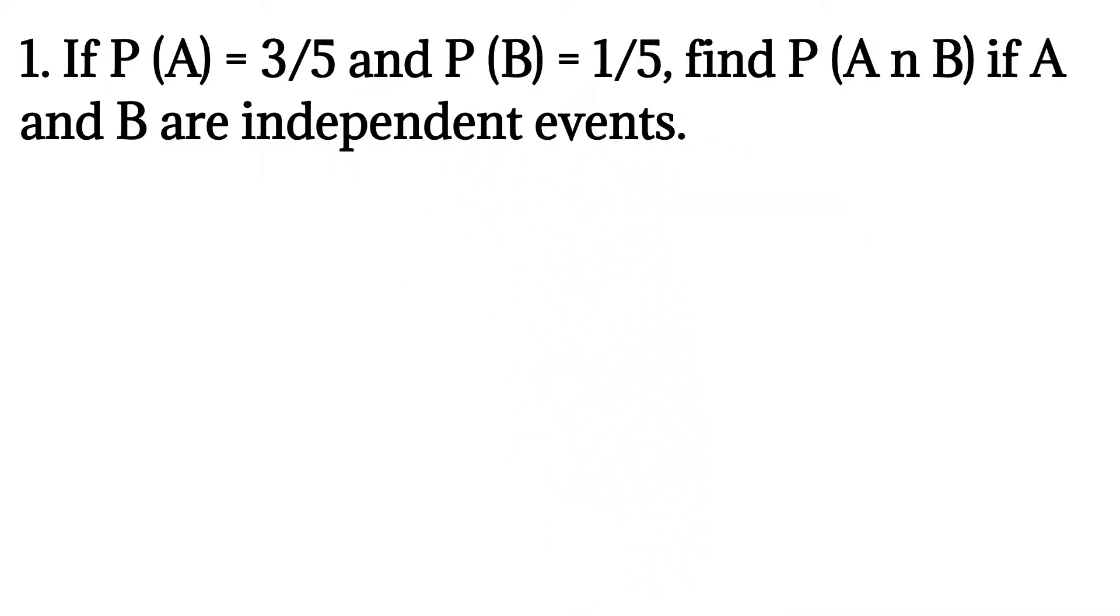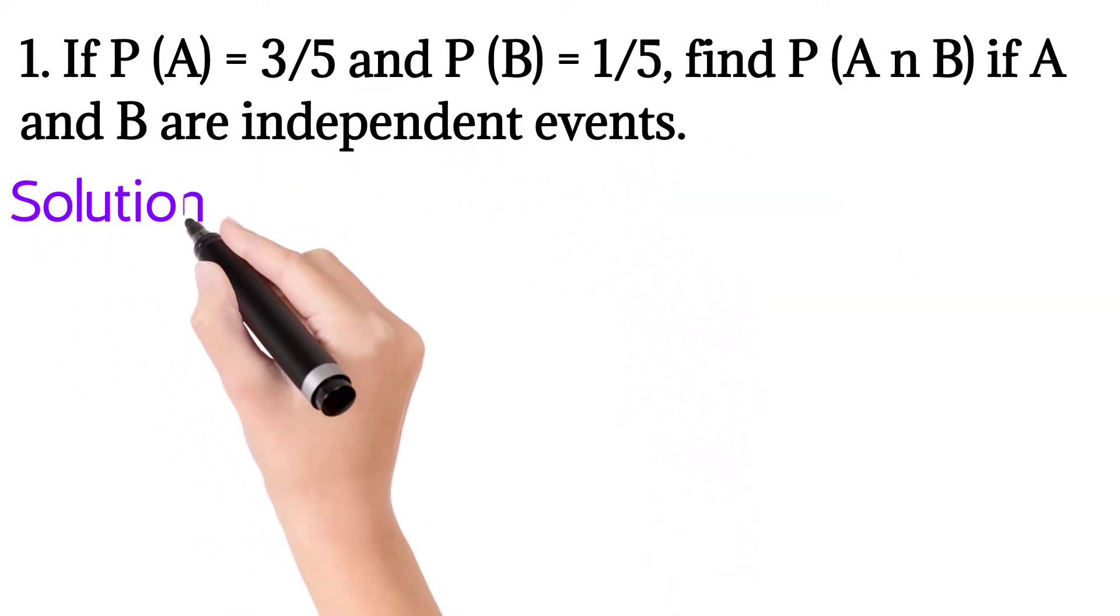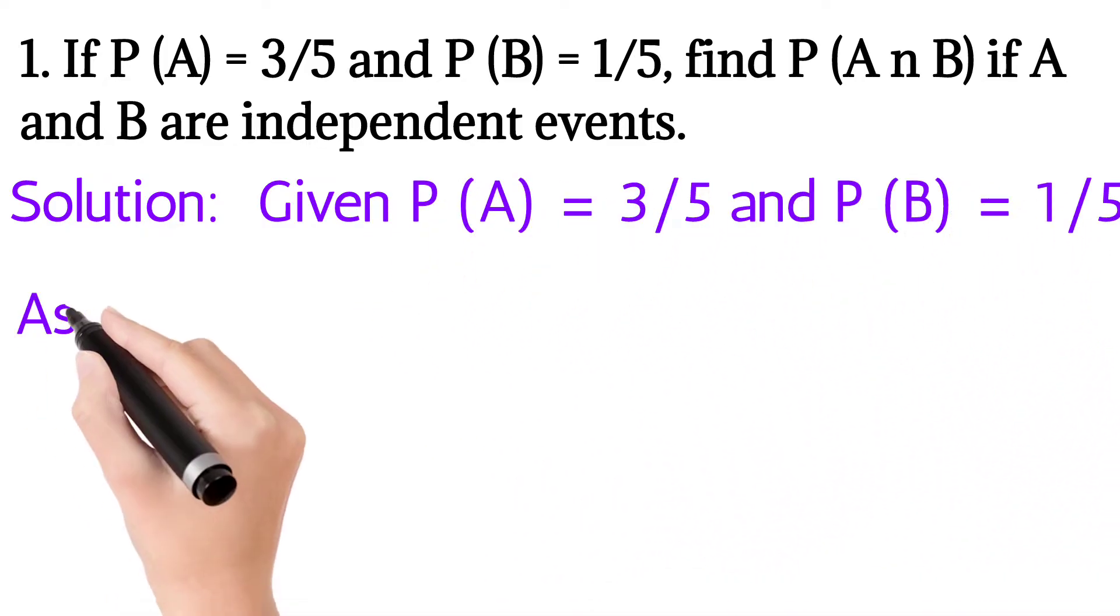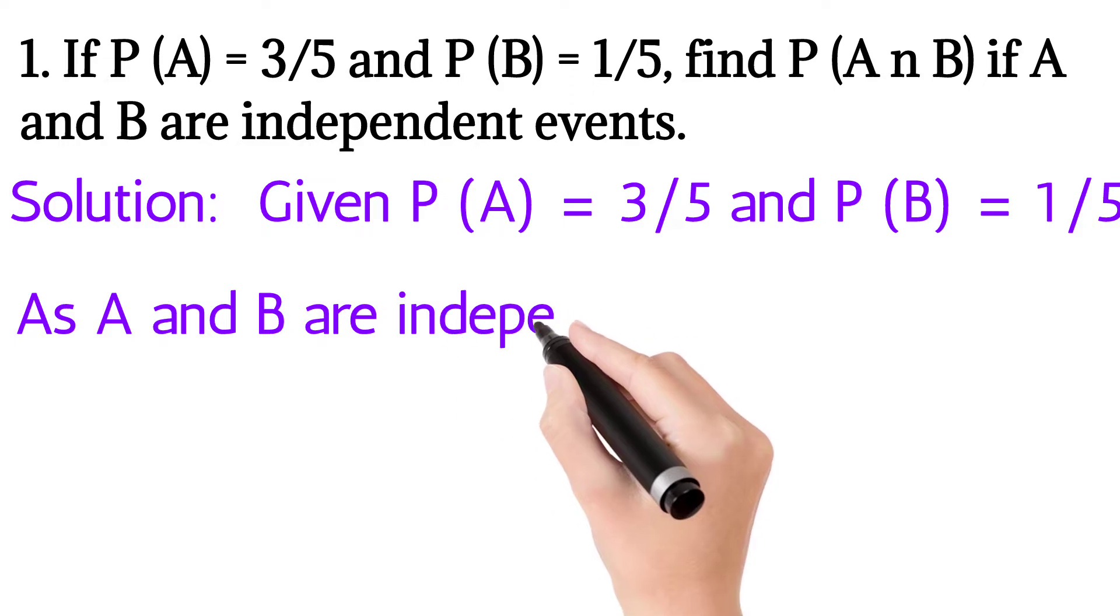If A and B are independent events, what is given in the question? P(A) is equal to 3/5 and P(B) is equal to 1/5. Since A and B are independent events...